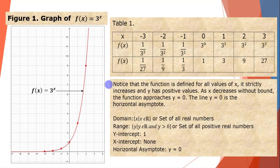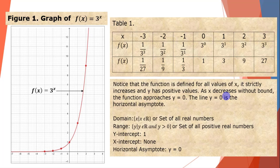Notice that the function is defined for all values of x. It strictly increases, and y has positive values. All values for x on the x-axis have their own corresponding points on the graph of f(x) = 3 raised to x. As x decreases without bound — meaning as x goes to negative infinity — the function approaches the x-axis, or y = 0.